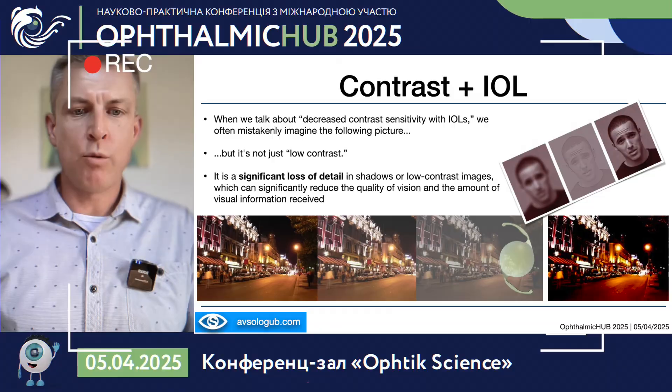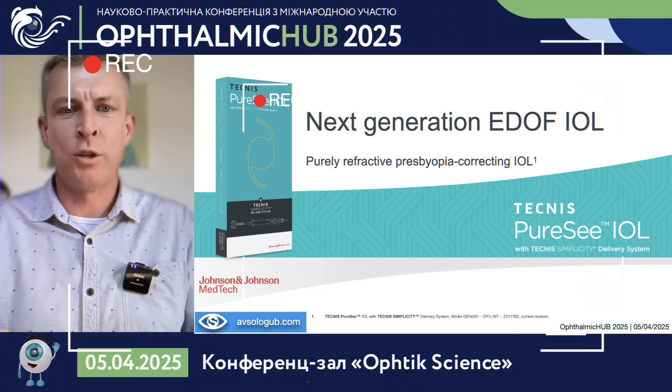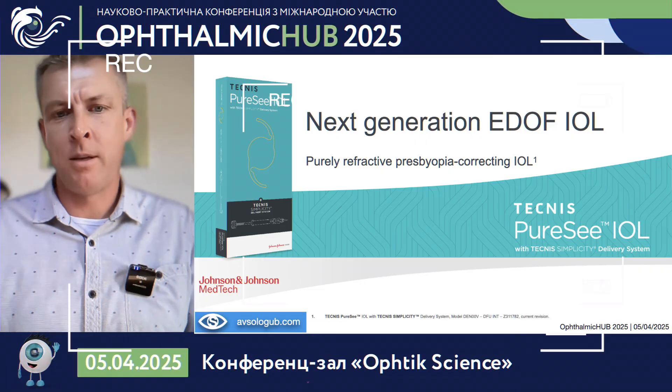The bad visual outcomes after surgery have, I would say, three main reasons. But first, contrast sensitivity — the ability to distinguish details between 30 to 80 cm from our eyes — sometimes has a more significant impact than visual acuity on the functional vision of a human. It is a real problem.